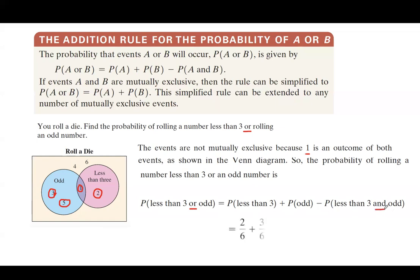The probability of less than 3 is 2/6 — there are just two numbers less than 3 out of 6. Plus the probability of odd, which is 3/6 — there are three odd numbers out of 6. Minus 1/6, since there is only one number in the intersection. They all have the same denominator: 2 plus 3 minus 1 is 4 over 6, which simplifies to 2/3 or about 66.7%.